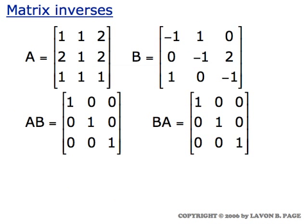Now let's come to the main topic: matrix inverses. Here we see a three by three matrix A and another three by three matrix B. If you multiply A times B, with A on the left and B on the right, you get the three by three identity matrix — and the same is true in the reverse order, B times A. That's what it means to say two matrices are inverses: their product is the identity matrix of the same size.